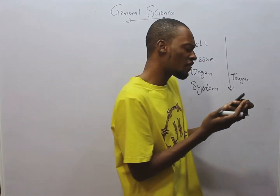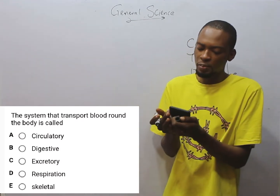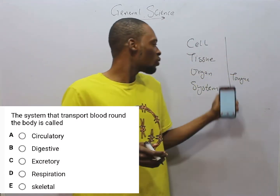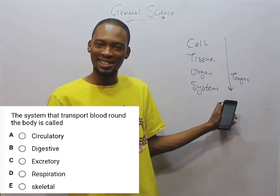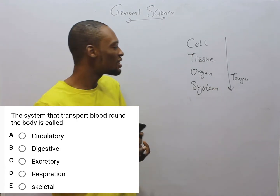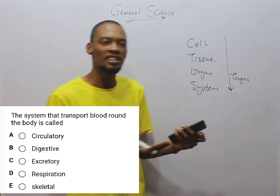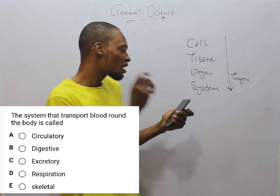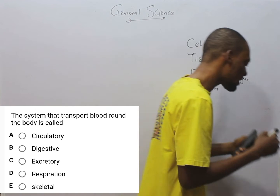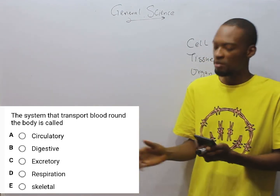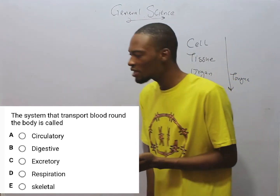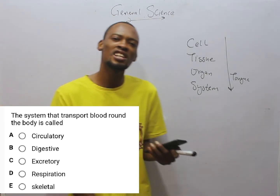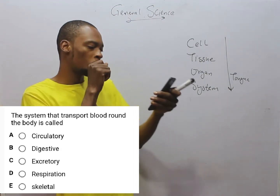The next question: the system that transports blood around the body is referred to as what? We have moved from organs to systems. A system is simply a group of organs performing a similar function. In the body we have systems like the excretory system, respiratory system, skeletal system, nervous system, digestive system, and so on.